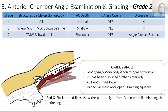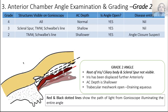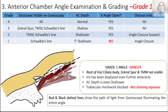Displacing the iris even further gives a grade 2 angle — you can only see two structures: trabecular meshwork and Schwalbe's line. You can't see the scleral spur anymore. This is still an open angle but very close to getting closed. The trabecular meshwork is still viewable and functioning. The anterior chamber is even shallower, and this type of angle on gonioscopy is seen in individuals suffering from something called an angle closure suspect.